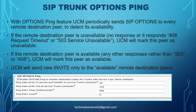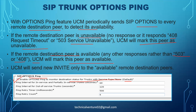To enable SIP options ping in CUCM, simply tick the checkbox to enable ping options to monitor destination status for trunks with service type None. With this feature enabled, CUCM sends SIP OPTIONS to every destination peer. If the destination returns 408 Request Timeout or 503 Service Unavailable, it is marked unavailable. Any other response marks it as available, and CUCM will only send new INVITEs to available destinations.